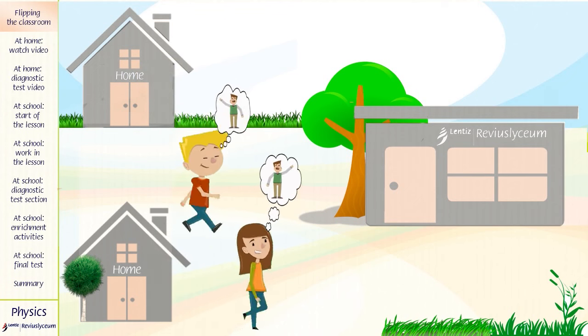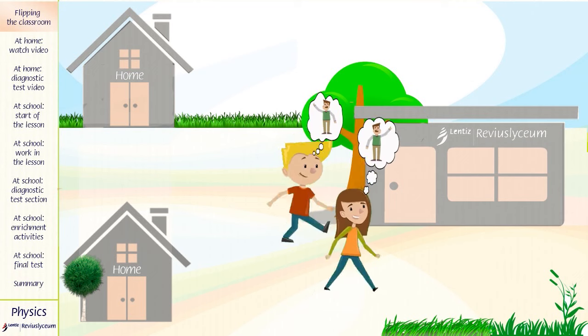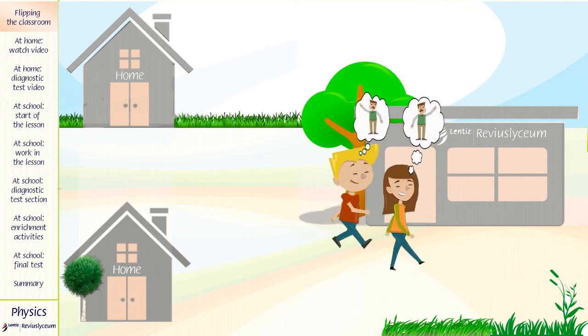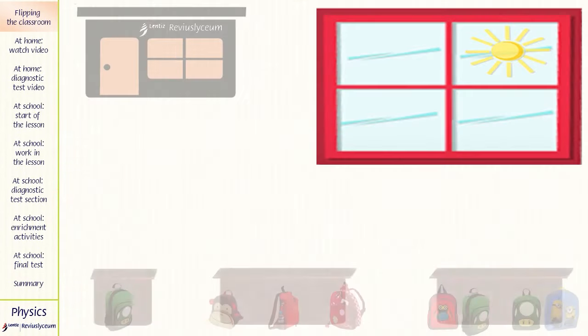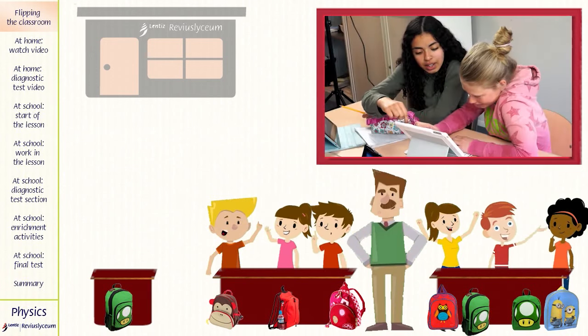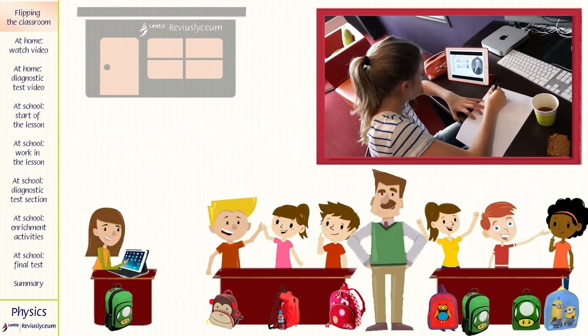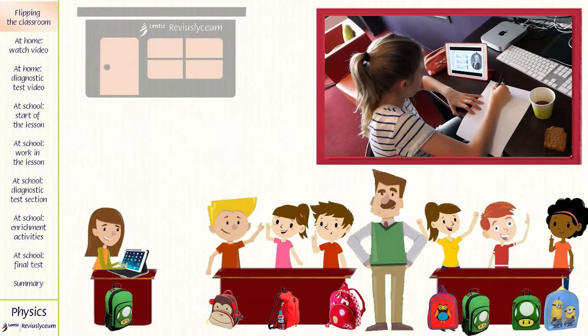When the pupils come to school, they have already seen the explanation about the topic on video. This means that they can start with their assignments straight away. At school, the pupils work together in groups on certain assignments independently. They can help each other and explain certain things that are not clear. Sometimes they work individually on a task at their own pace.